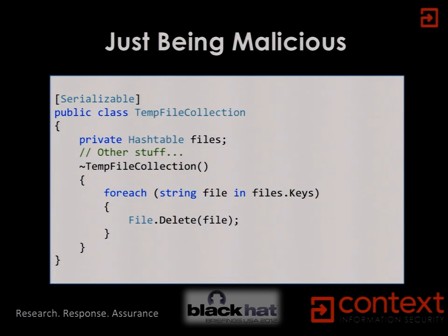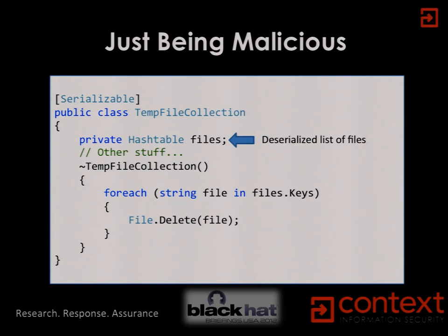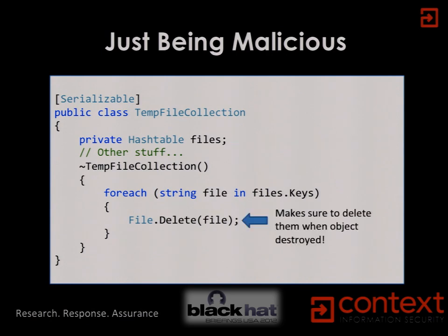Let's find some classes that do something nasty. There's a class called TempFileCollection which contains a list of file names that are the output of a compilation process — it keeps track of temporary files and makes sure they get deleted at some point. It implements a finalizer which just walks through this list of files and deletes them. So if an attacker can serialize a list of files and hand it to you, when that object goes away it will start deleting arbitrary files on your file system, even though you haven't interacted with the object at all.